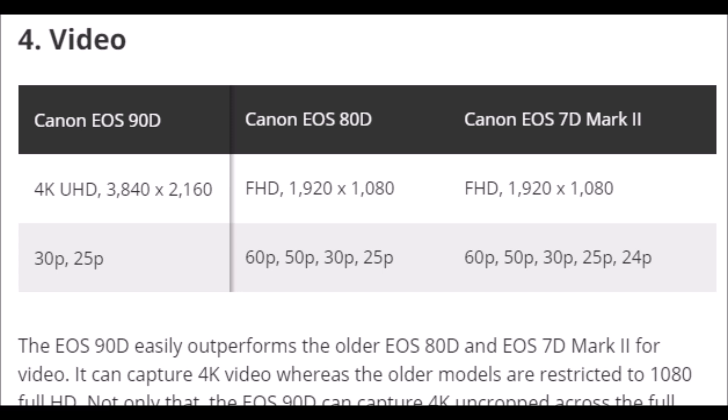แต่ในขณะเดียวกัน ตัว 80D กับ 7D Mark II ทำได้แค่ Full HD ที่ 60, 30 แล้วก็ 25 fps และตัว 7D ก็จะเพิ่ม 24fps ถามว่าในการใช้งานทั่วไปในช่องของผมเองก็จะใช้สูงสุดคือ Full HD ซึ่งเครื่องและอุปกรณ์ต่างๆ มันก็สามารถตัดต่อได้ดี แต่ถ้าเกิดเป็น 4K ก็อาจจะมีปัญหานิดนึงสำหรับคอมพิวเตอร์ที่ใช้งานอยู่ในปัจจุบัน สมาชิกก็ลองเลือกว่าอะไรดีกว่ากัน ถ้าเราไม่ถ่าย 4K วันนี้ ลูกหลานเราก็จะดูลำบาก